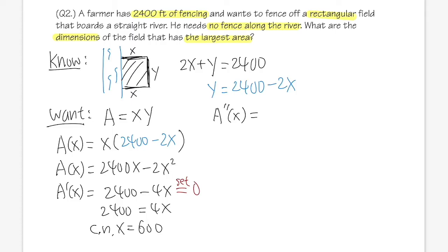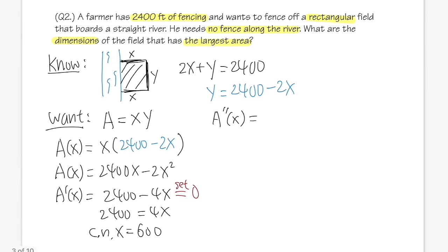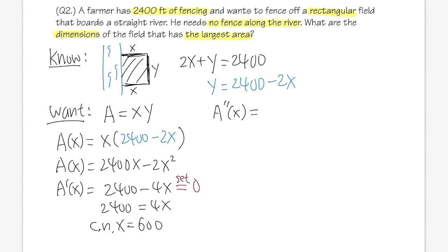Second derivative. In fact, this is an open down parabola, so you have a maximum. But second derivative, take a look here. Take the derivative. The derivative of 2400 is zero. The derivative of negative 4x will give you negative 4.